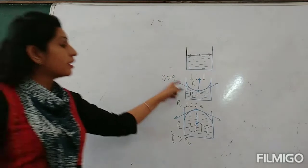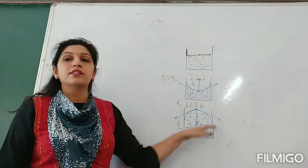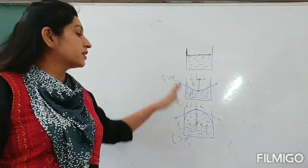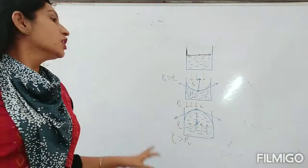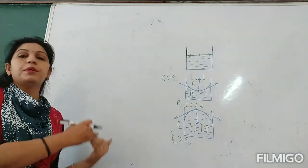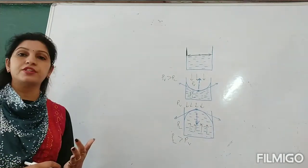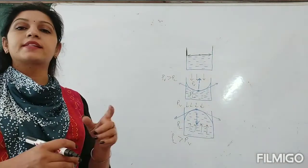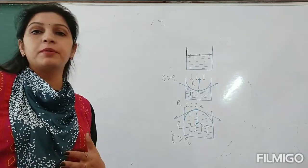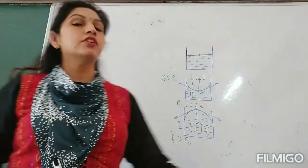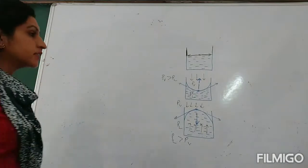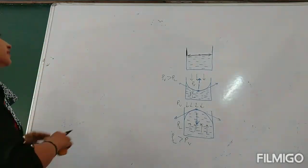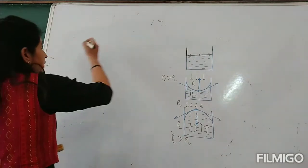Whenever there is a curved surface there is always excess pressure on one side — either on the vapour side or on the liquid side. So the next topics we have to discuss are: excess pressure inside a liquid drop, excess pressure inside an air bubble, and excess pressure inside a soap bubble. All these articles will follow the same approach.